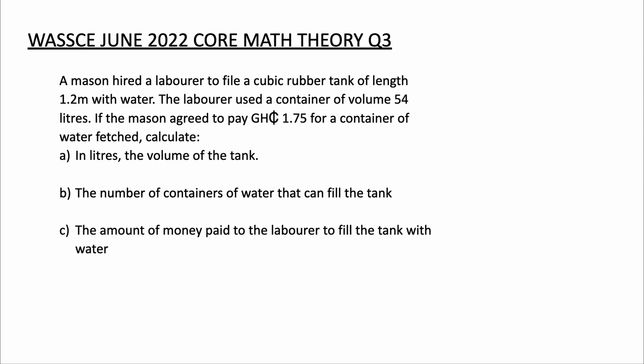A mason hired a laborer to fill a cubic rubber tank of length 1.2 meters with water. The laborer used a container of volume 54 liters. If the mason agreed to pay 1.75 Ghana cedis for a container of water fetched, calculate: A) in liters, the volume of the tank, B) the number of containers of water that can fill the tank, and C) the amount of money paid to the laborer to fill the tank with water.